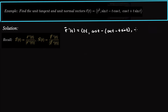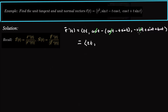The second component simplifies from cosine t minus t sine t. Then the last component: derivative of cosine t gives negative sine t, and product rule for t sine t gives sine t plus t cosine t. So we actually have some nice cancellations — the minus minus gives plus t sine t.